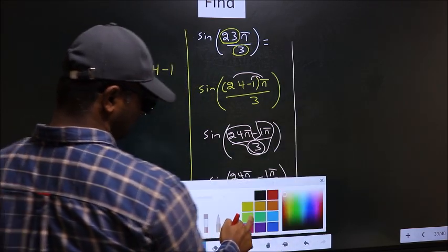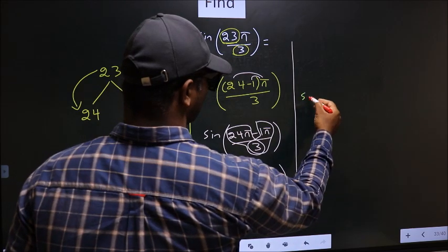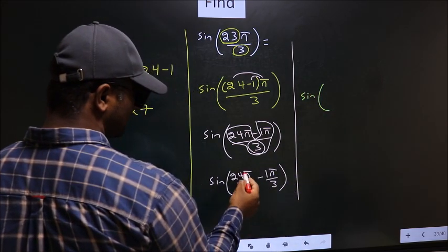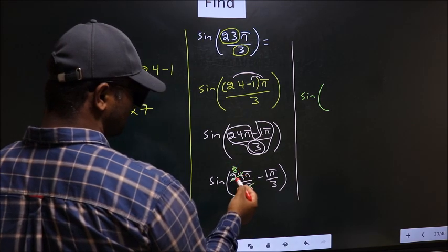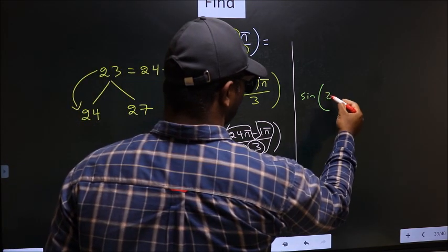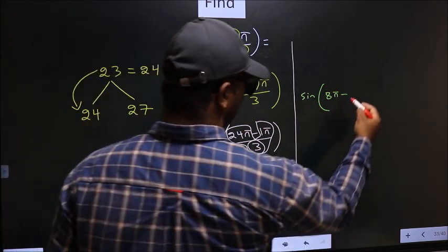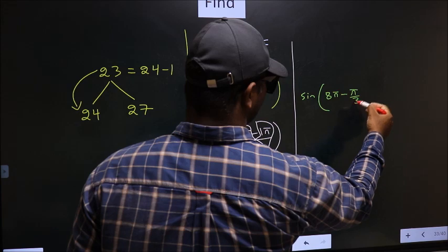That is 24π by 3, you cancel: 3 ones, 3 eights. So 8π minus this angle as it is you write: π by 3.